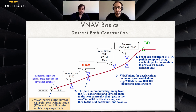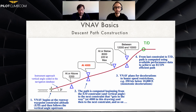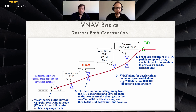The VNAV begins at the runway waypoint constraint altitude and then follows the vertical angle upstream. You can see the star waypoint created, then the three-degree glide angle — which is the instrument approach vertical angle coded in the navigation database. Then at or above 2,200 feet you will see the triangle pointing up. The path is completed beginning from the end of the descent constraint and vertical angle to the next constraint, which enters the path at 4,000 feet.